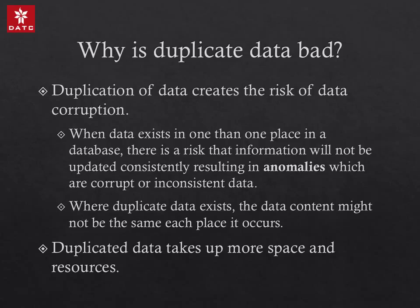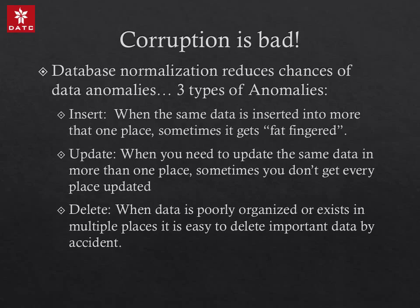Duplicate data is not only inefficient, it causes data hygiene problems or inaccuracy in the computer data. If the same item of data exists in two or more places, each datum must be updated in each place it exists. If the datum is not updated everywhere, the data becomes inconsistent. Such database errors are known as anomalies. There are three types: an insert anomaly when entering data incorrectly, an update anomaly when changing data inconsistently, and a delete anomaly when mistakenly deleting data.